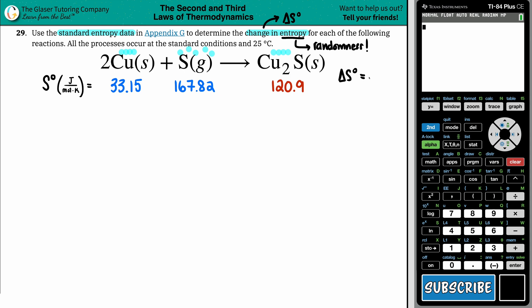So a decrease in entropy, a less random product would give us a negative delta S value. So we're going to guesstimate that we should see a negative value at the end of the day.